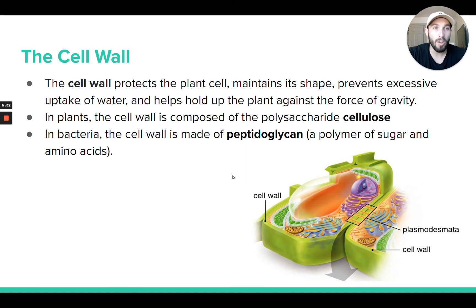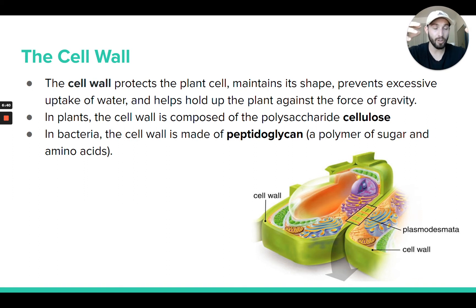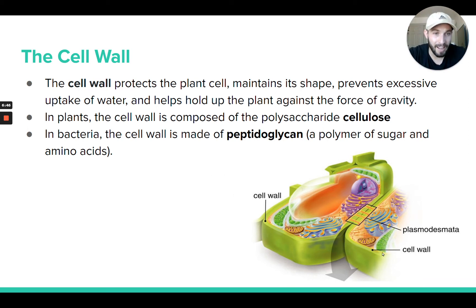Then we have cell walls. Certain types of cells do have cell walls, not our cells. Prokaryotic cells do have a cell wall — this is the very sturdy structure that's outside the plasma membrane. The plasma membrane would be on the inside, which you can't really see — it's like this thin yellow line here — and then on the outside of it you have this much thicker structure, that's the cell wall.